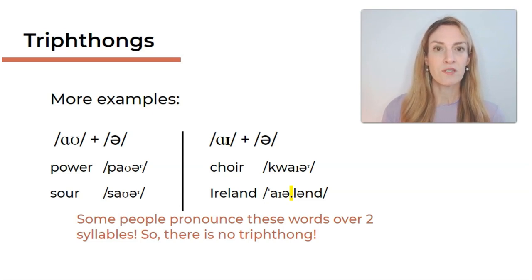And then the same of course for choir. You could say choir, and then clearly there are two syllables here. So yes, that is possible. And then there would be no triphthongs because triphthongs always mean diphthong plus schwa in one syllable.